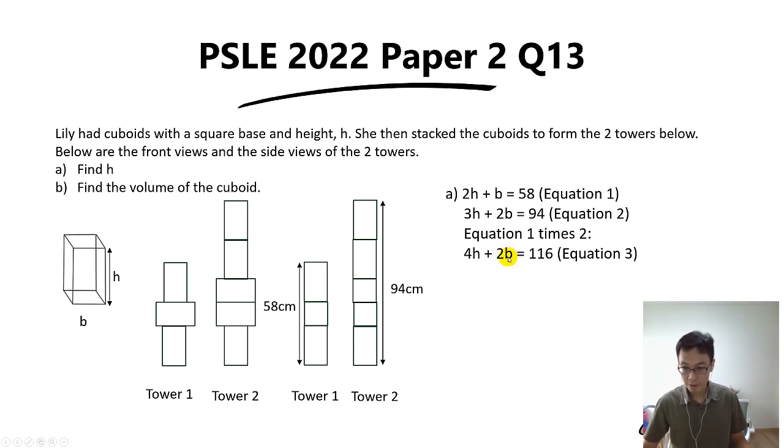We take equation 3 minus equation 2. If we do that, 2b and 2b will be gone because 2b minus 2b is no more b. And 4h minus 3h will give us h.